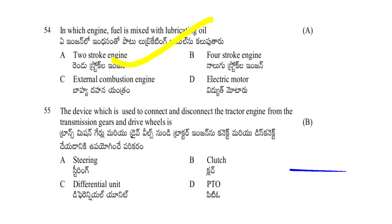The device used to connect and disconnect the tractor engine from the transmission gears and drive wheels is: steering, clutch, differential unit, or PTO. The answer is clutch.